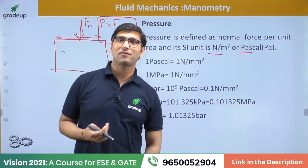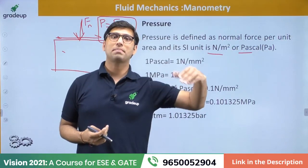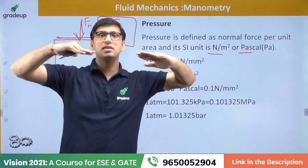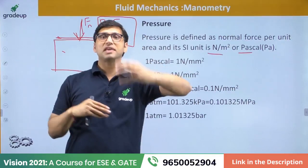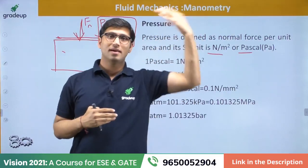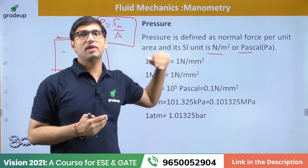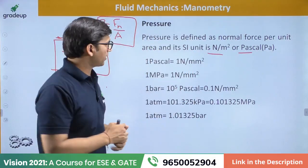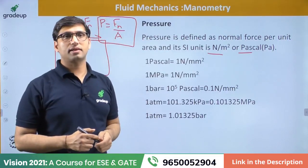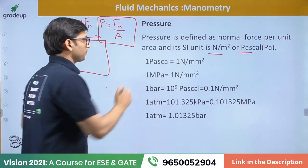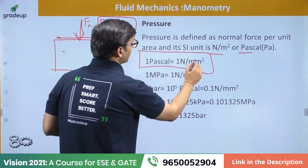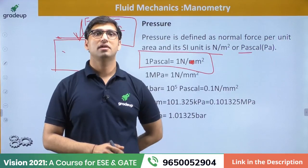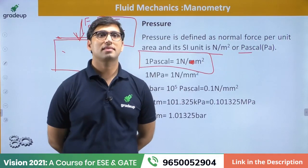Surface tension is defined as the tensile force acting on the surface per unit length, or surface energy per unit area — but it is not part of this manometry topic. The unit of pressure is Pascal or Newton per meter square. One Pascal equals one Newton per meter square — note: that is one Newton per meter square, not mm square — that is a printing mistake.